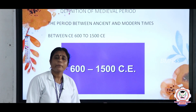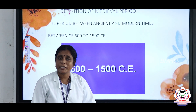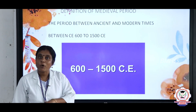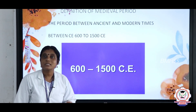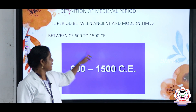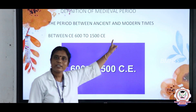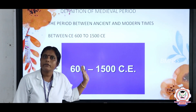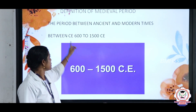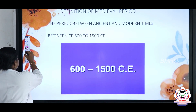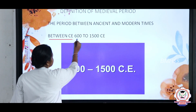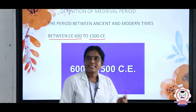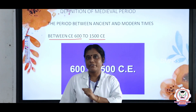Definition of medieval period: the period between ancient and modern times is known as the medieval age. When did the medieval period start? Between 600 to 1500 CE.